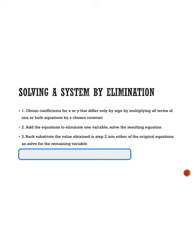After we've solved it, we know either what x or y equals, so we can move on to back substitution. We take whatever we got in step 2 — whatever y equals or whatever x equals — and plug it back into the original equation to solve for the other variable. And then our last step is to check our solution to make sure we're correct.